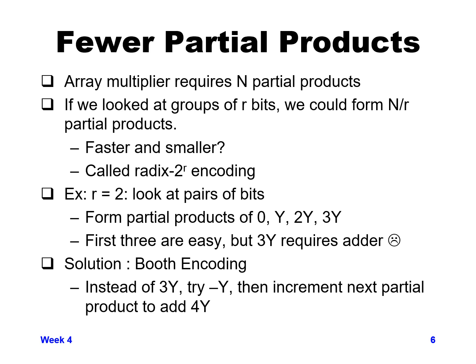One solution to the 3y problem is Booth encoding, where instead of using 3y you use minus-y and increment the next partial product to add 4y. Since 4y is just y shifted left by two bits, and minus-y replaces the 3y term. Booth encoding is quite complex — there's a section on it in the book, and looking up papers or online resources on Booth encoders is recommended for more information.